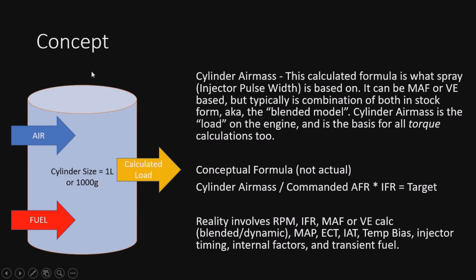For a more visual idea of what's happening: we have our air mass models — the air coming in — modeled on MAF or VE. From stock form you have a blended model, MAF-based and VE-based. Cylinder air mass is the actual load on the engine — this affects the calculated load as well as all the torque calculations. Fuel also has something to do with that: cylinder air mass gets divided by the commanded AFR and that's going to be times the flow rate, so our fuel model has to jive with our air mass model.